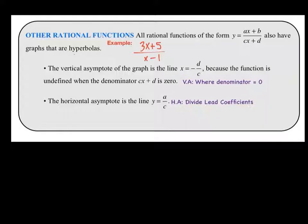The vertical asymptote of the graph is the line where x equals negative d over c. So what they've done here is solve for the denominator equaling 0. If you set cx plus d equal to 0, you would subtract the d and divide by c. That's how they get negative d over c. So your vertical asymptote for our example would be wherever x minus 1 equals 0, so you would add the 1 over and your vertical asymptote would be at x equals 1.